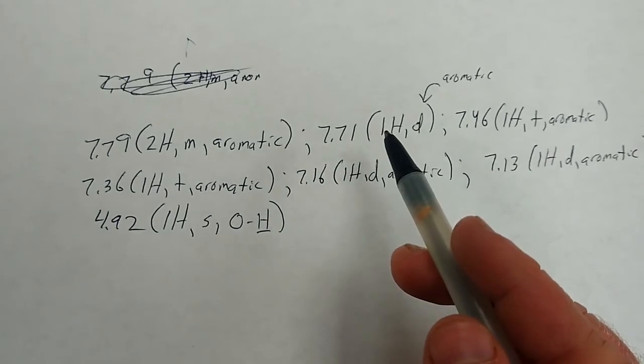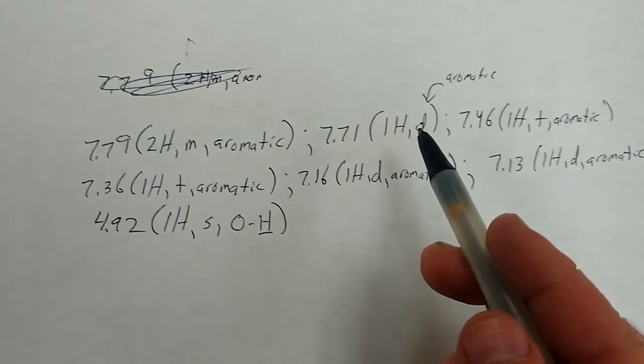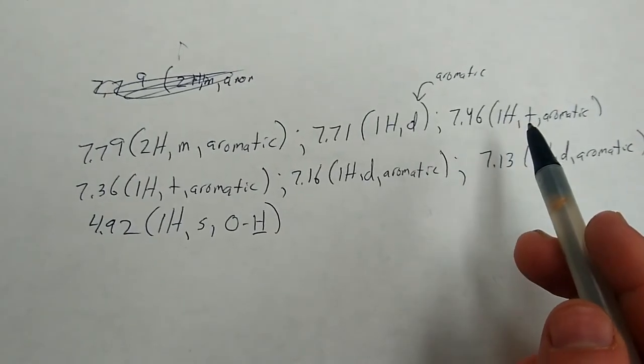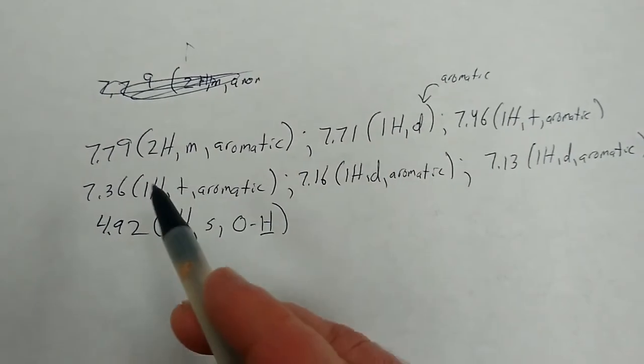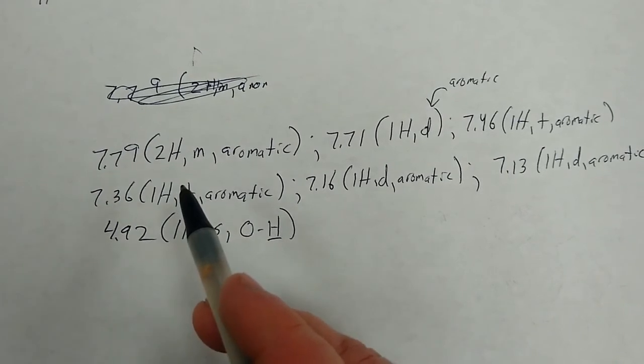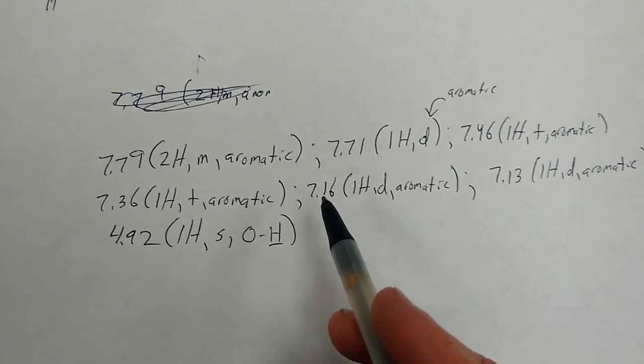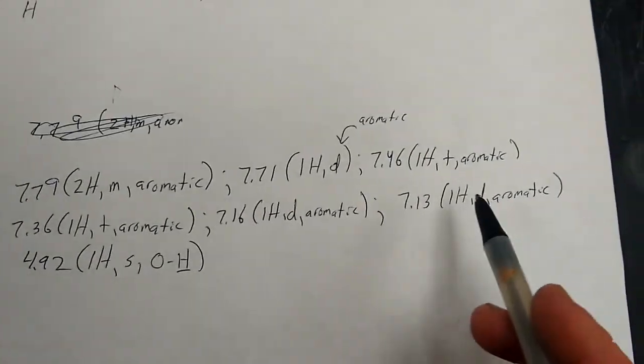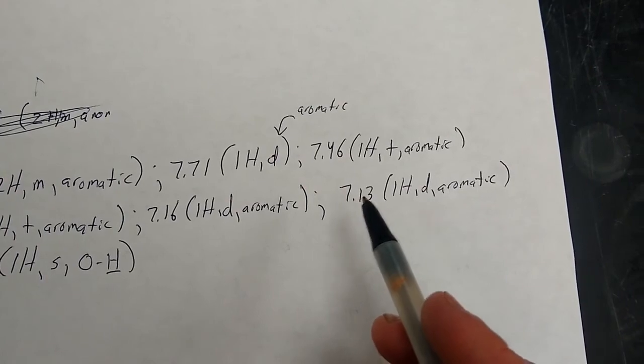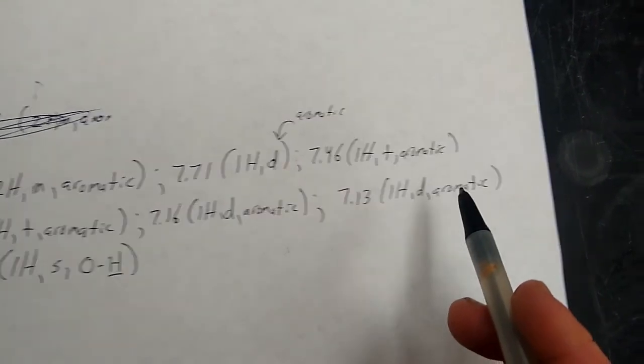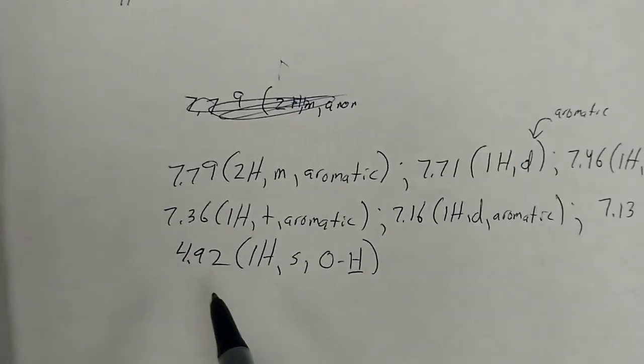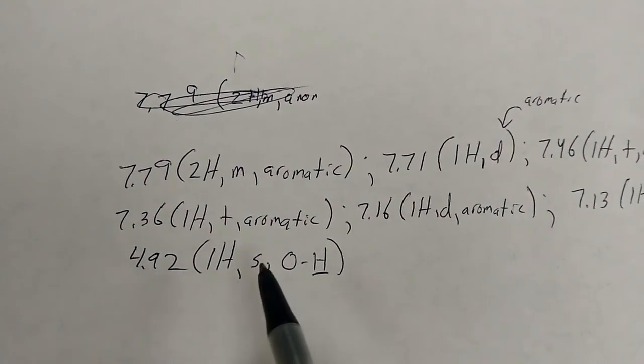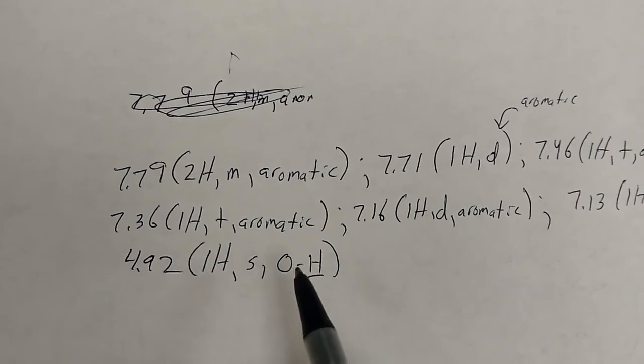Next signal: one H triplet aromatic. Next signal: one H triplet aromatic. Next signal: one H doublet aromatic. And last aromatic signal: one H doublet aromatic. And then finally for the alcohol, four point nine two, one H, and then S for singlet, and you can just put OH there to notate it.